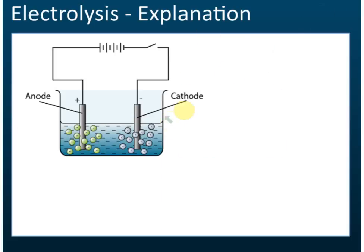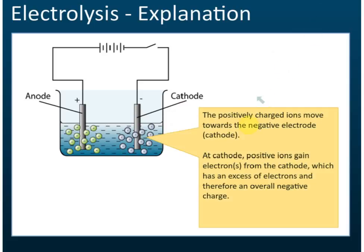And what happens at the cathode? The positively charged ions move toward the negative electrode — the positive ions will move to the cathode. Remember, the negative electrode contains a lot of electrons. Those electrons came from the positive electrode.